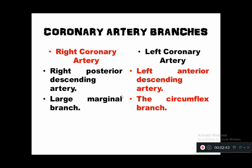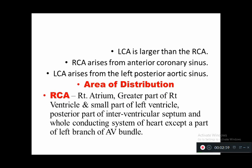The coronary artery is divided into right coronary artery and left coronary artery. The right coronary artery has two branches: right posterior descending artery and a large marginal branch. The left coronary artery has two branches: left anterior descending artery and the circumflex branch. The right coronary artery is smaller than the left and arises from the anterior coronary sinus, whereas the left coronary artery arises from the left posterior aortic sinus.